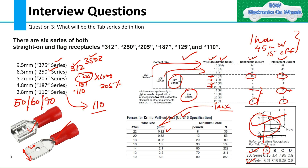The second table shows the minimum force required for the crimp pullout test, also based on UL310 specification. For example, if you are using 16 AWG wire — approximately 1.3 square mm — the minimum force you have to apply is 133 Newtons. This is how the crimp pullout test specification is given within the tab series definition.